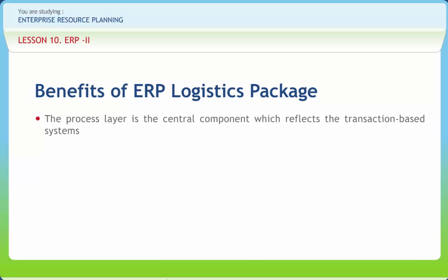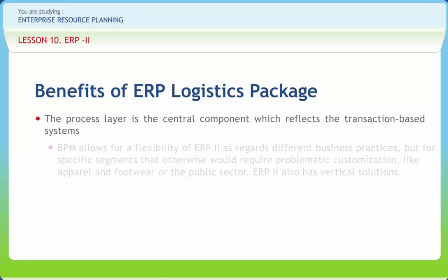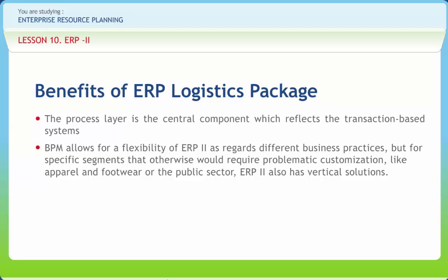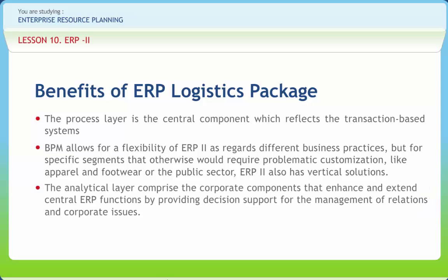The process layer is the central component which reflects the transaction-based systems. ERP-2 is web-based, open, and componentized. ERP is the central component in the ERP-2 conceptual framework. The traditional ERP modules like Financials, Sales and Distribution, Logistics, Manufacturing, and Human Resources are still the backbone of ERP, along with additional modules like Quality Management, Project Management, or Maintenance. BPM allows for flexibility of ERP-2 as regards different business practices. For specific segments that would otherwise require problematic customization — like apparel and footwear or the public sector — ERP-2 also has vertical solutions. The analytical layer comprises the corporate components that enhance and extend central ERP functions by providing decision support for the management of relations and corporate issues.